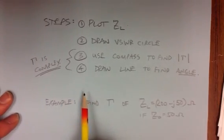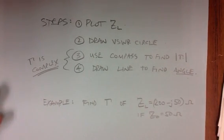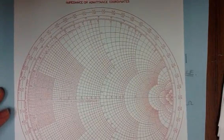So the real part is the magnitude, which is here, and the imaginary part is the angle. But you don't even really need to know that. You just plot the impedance, draw the circle, draw a couple of lines, and you're done.